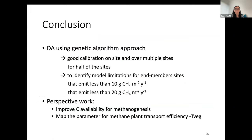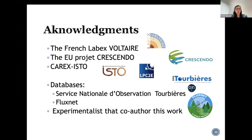To conclude, we used data assimilation with a genetic algorithm approach that provides good calibration for sites emitting an average amount of methane — about half of our sites. It also allows us to identify model limitations for end-member sites and processes that are missing in our model. Perspective work will be to improve carbon availability for methanogenesis and to map the parameter representing methane plant transport. I want to acknowledge the funding agencies, the databases that provided field data, and the experimentalists who co-authored this work and shared their data with us.